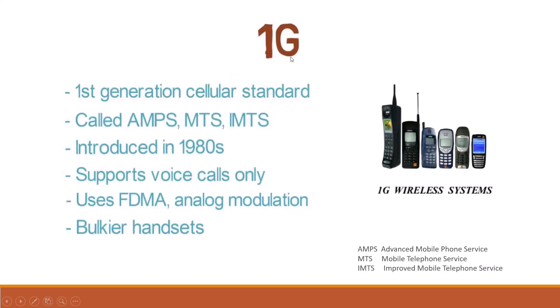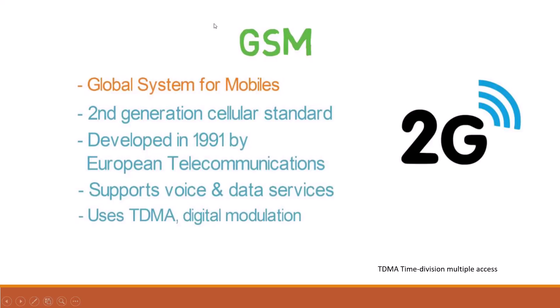Initially, it is 1G. 1G is a first generation cellular standard called by different names like AMPS, MTS, IMTS. It employs analog modulation technique with FDMA. But 1G handsets were bulkier with antenna on top. Moving forward, the cons of 1G are replaced by GSM — Global System for Mobile Communication. GSM is a second generation cellular standard developed in the year 1991 by European Telecommunication to support voice and data services. It uses digital modulation with TDMA. While 2G handsets were cheaper and lesser in size, GSM was the first generation to introduce SIM cards.